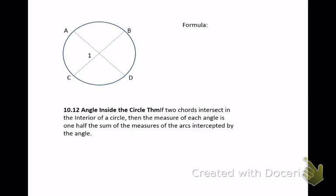If you have a couple of chords that intersect, they could intersect at the center, which would create central angles equal to the arc. Or the two chords could cross off-center, and the vertex is no longer at the center. If that's the case, the formula is: the measure of each angle is one half the sum of the arcs intercepted by the angle. In your spinner, the angle equals the front arc plus the back arc divided by 2.